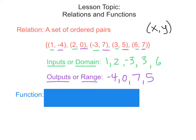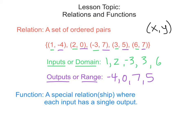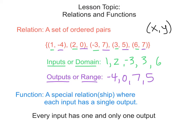So what makes a relation, or a set of ordered pairs, different from a function? Well, a function is a special relation — you could think about it as a relationship — where each input has a single output. In other words, every input has one and only one output.